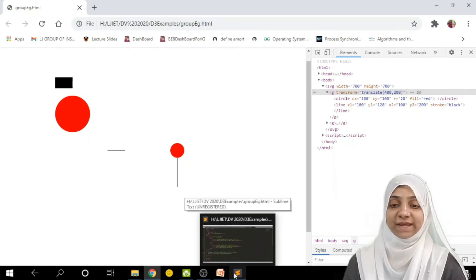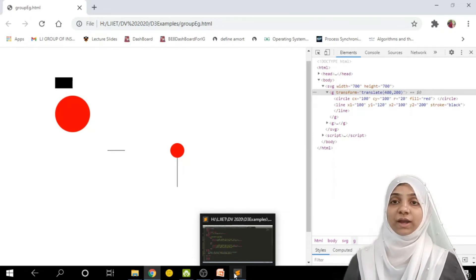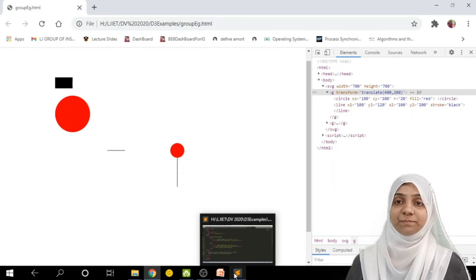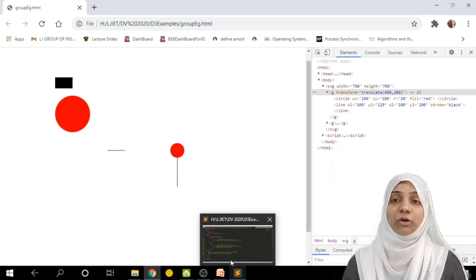This is how you can move a complete figure, which is grouped under, which are nothing but collection of shapes, which are a single group, and can be moved from one point or one location over the webpage to another position of web.